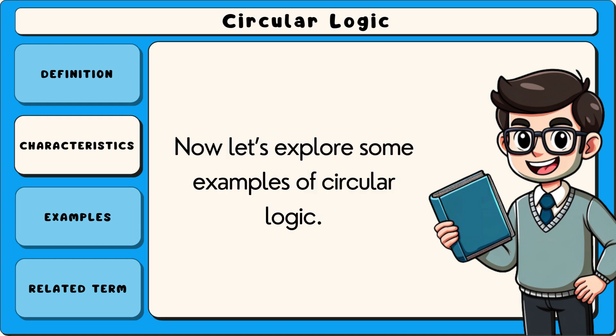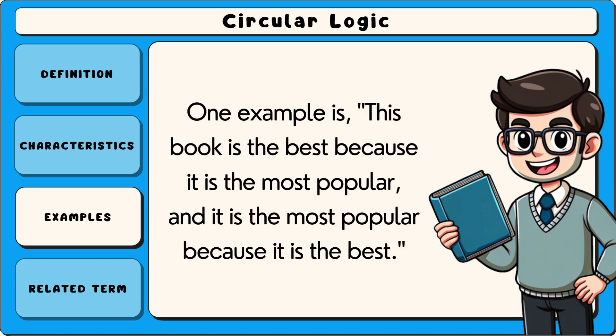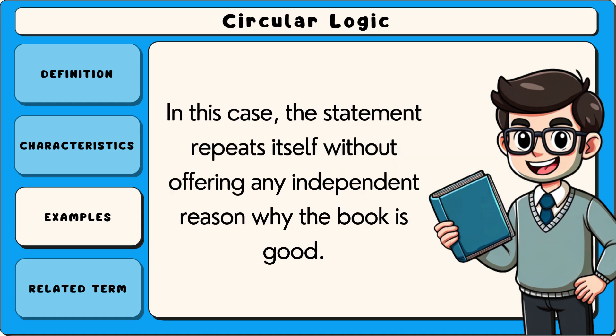Now let's explore some examples of circular logic. Circular logic can be found in many everyday arguments. One example is: this book is the best because it is the most popular, and it is the most popular because it is the best. In this case the statement repeats itself without offering any independent reason why the book is good.